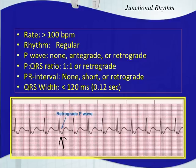So those are your three types of junctional rhythms: junctional escape, accelerated junctional, and junctional tachycardia. The only difference among those is the rate. Junctional escape is 40 to 60 beats per minute, accelerated junctional is greater than 60 but less than 100, and junctional tachycardia must be greater than 100.